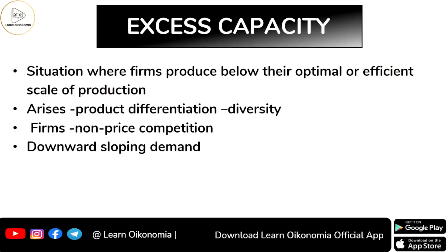Now, having understood monopolistic competition, it's time to learn what excess capacity is. Firms in a monopolistically competitive market structure produce below their optimal point — that is, below their efficient scale of production. This mainly happens due to product differentiation.